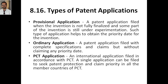A provisional application is a patent application filed when the invention is not fully finalized. You may be afraid that somebody else comes up with the same invention and gets the patent first, but you don't have sufficient data to explain the entire concept. So you can go for the provisional application, making sure that within one year you provide the complete details. It is filed when some part of the invention is still under experimentation.